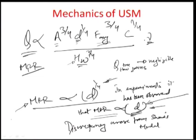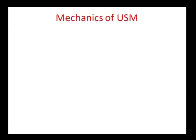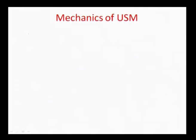Shaw tried to find out in reality what goes on. The discrepancy was addressed by Shaw by looking at the overall shape of the grain. Shaw actually looked at the grain shape under a microscope and found out that the grain is not a spherical grain, but a sort of flowery structure on the surface.